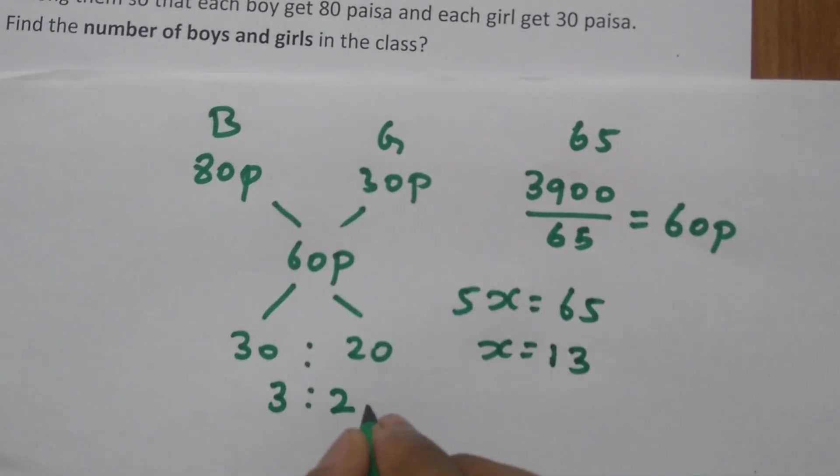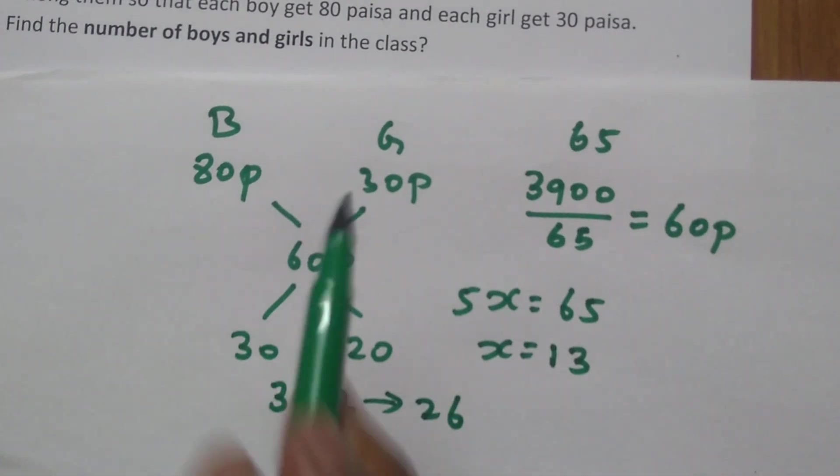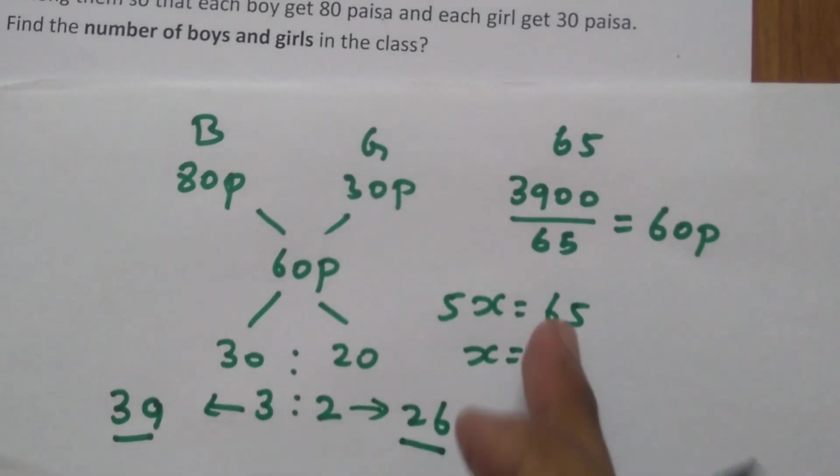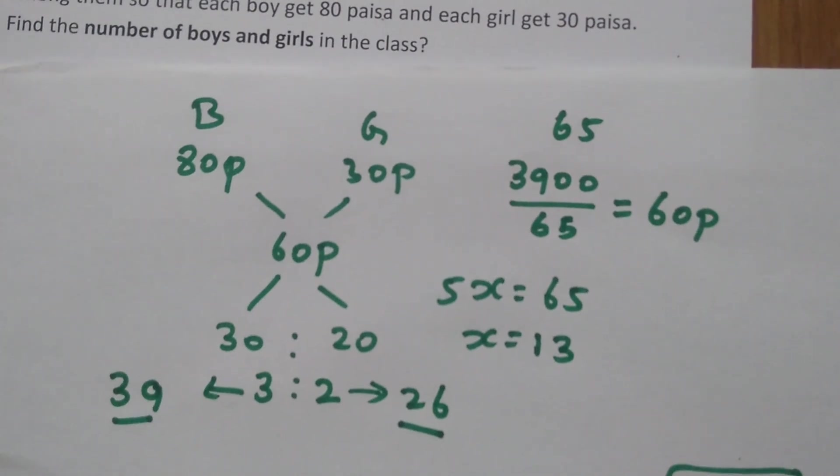So in girls you have 2 parts: 2×13=26 girls. In boys you have 3 parts: 3×13=39 boys. Adding them gives 65 students, which is the total strength of the class.